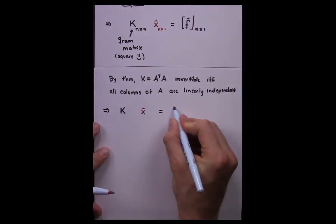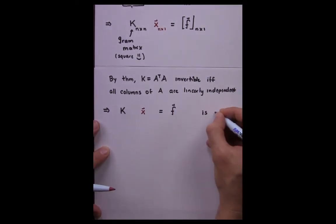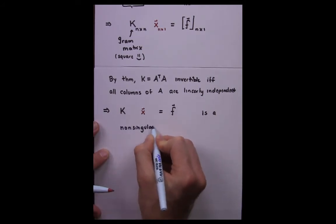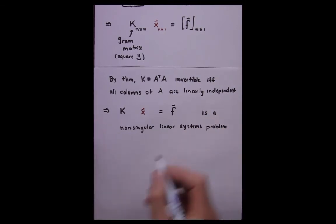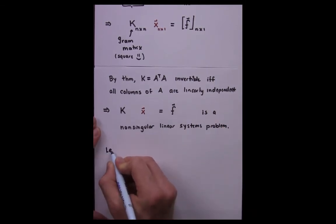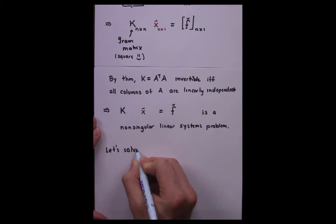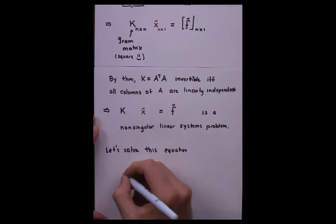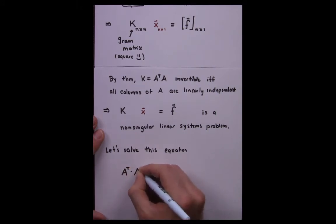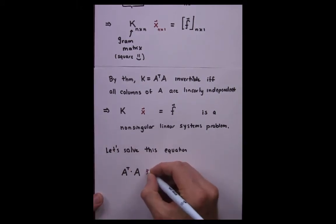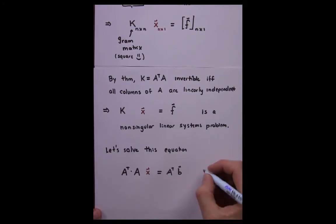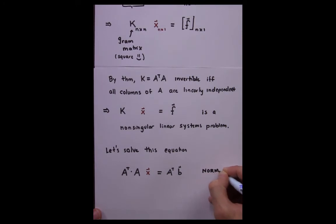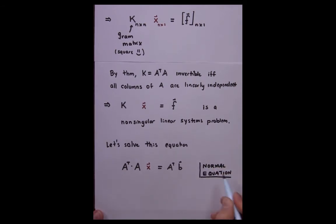which means the system we're now trying to solve is a non-singular linear systems problem. We've just transformed our initial least squares problem into an equivalent non-singular linear systems problem. Known matrix A transpose times A times unknown vector X equals to the right-hand vector A transpose times B.